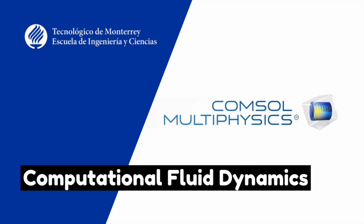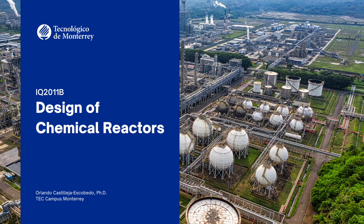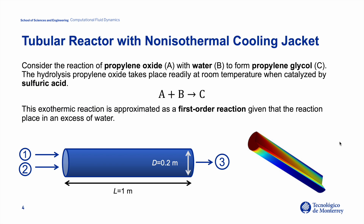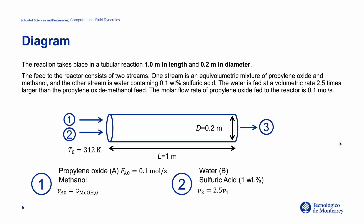Hello students. In this video I'm going to show you how to model a tubular reactor using COMSOL Multiphysics. In this tubular reactor we are going to have an inlet stream of propylene oxide as reactant A, and reactant B is water. They are going to form propylene glycol as product C. This is an exothermic reaction that follows first-order reaction kinetics. The reactor dimensions are one meter in length and a diameter of 0.2 meters.